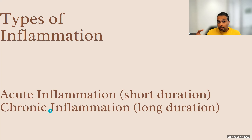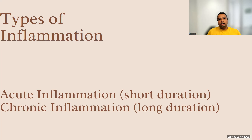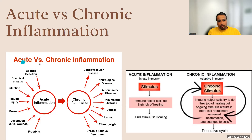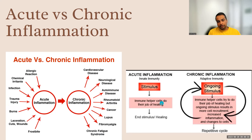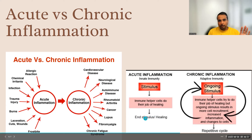But in chronic inflammation, that signal keeps going. As I mentioned, when you hit something it gets swollen — imagine that happening in your body where something is there and your body is trying to fight it but is not able to resolve it. It keeps going and that area remains enlarged, causing a lot of issues. What causes acute inflammation? Simple things like allergic reactions, chemical irritants, infection, and trauma. Your immune cells come in, fight it, fix it, and then it ends — no more inflammation.